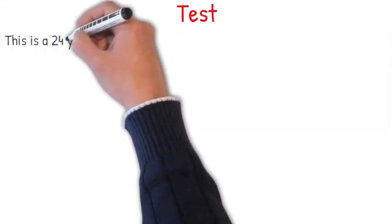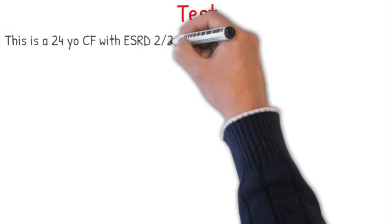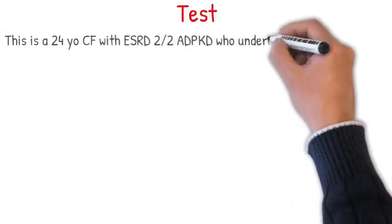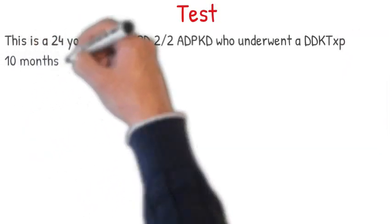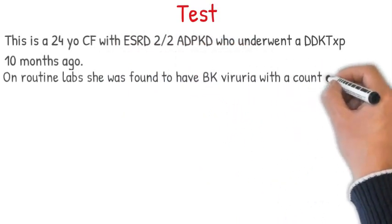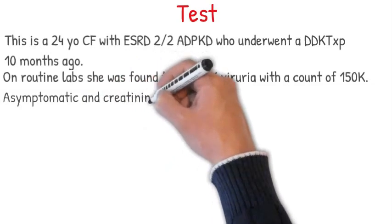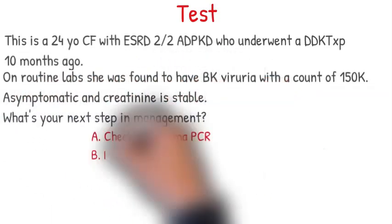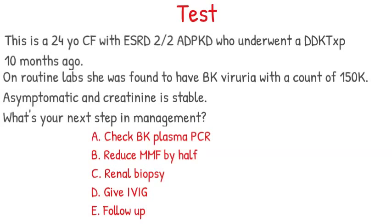Let's do a test. A 24-year-old Caucasian female with end-stage renal disease secondary to autosomal dominant polycystic kidney disease underwent a deceased donor kidney transplant 10 months ago. On routine labs she was found to have BK viruria with a count of 150,000. She's asymptomatic and her creatinine is stable. What's your next step in management? The answer is A: check BK plasma PCR. Depending on that result, you will decide the treatment. You don't treat according to the urine result alone, and since creatinine is stable, try to avoid a biopsy.